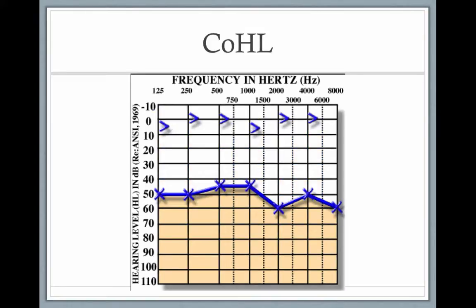In this picture, you have a conductive hearing loss where the bone conduction scores are all normal but the air conduction scores are abnormal. All the carets are in the normal range, and there's an air-bone gap of 10 decibels between the carets and the air conduction thresholds. That's a conductive hearing loss. Once the conductive pathology resolves itself, those X's are going to move back up to the normal range.